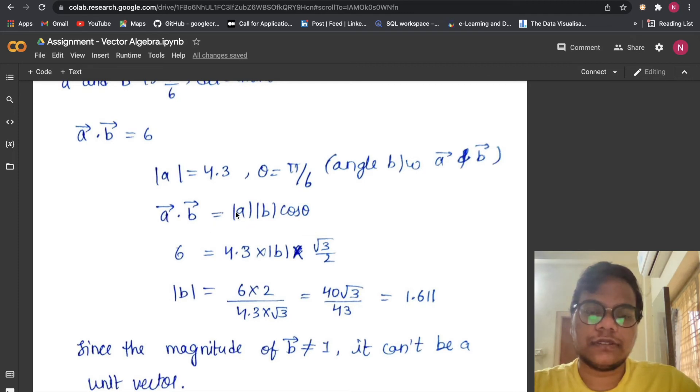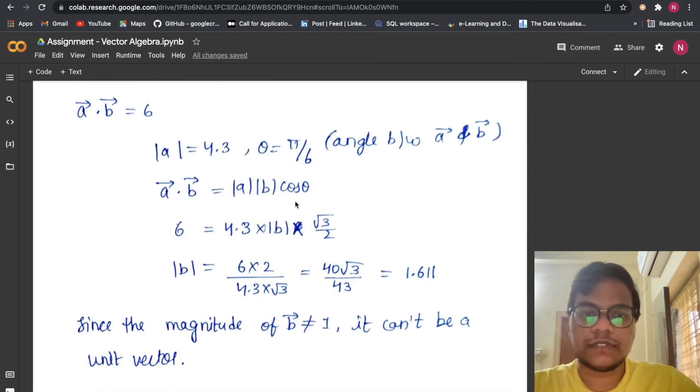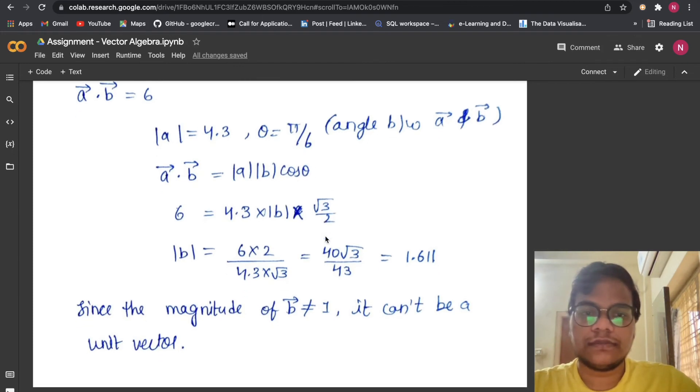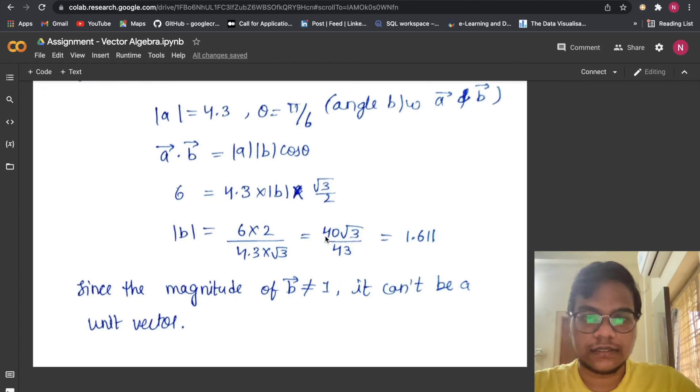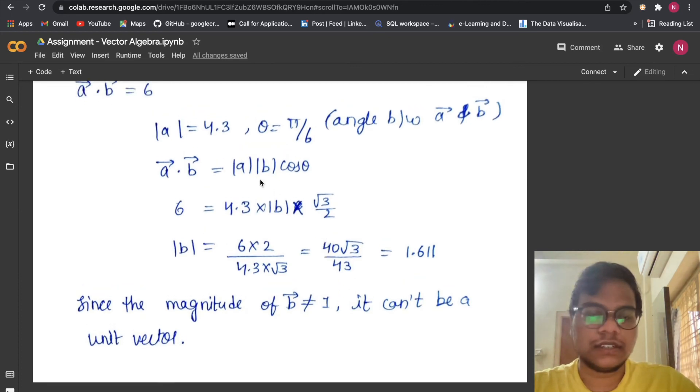ā · b̄ = |a| × |b| × cos θ. So we substitute: when θ is π/6, we got this value. You can use your calculator if you don't remember your trigonometric values. Here I'm putting |a| value 4.3. I don't know the |b| value, I just kept it like that. Now we are going to find the |b| value. So cos 30 value is √3/2. You can just solve this using your calculator.